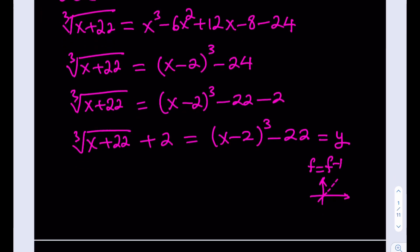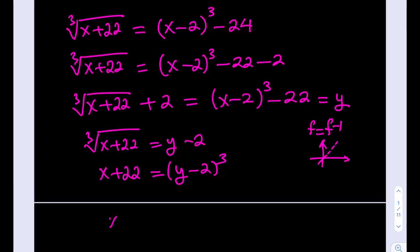I'm saying that y is equal to that. If you isolate the cube root here, cube root of x plus 22, and subtract 2 from both sides, that's going to give you this. And then if you cube both sides, you're going to be getting something interesting. I still need to isolate my x. From here, I'm going to be getting x equals y minus 2 cubed minus 22.